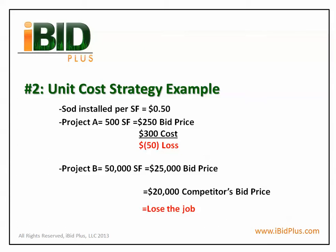On the other side, Project B includes 50,000 square feet of sod, and if priced at 50 cents it will be $25,000. However, this bid does not take into account the efficiencies that may be realized by doing a project at this grand of scale. Therefore, the competitor's price may be at $20,000 and you lose the job.